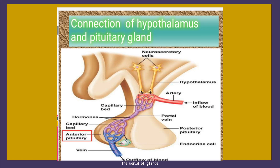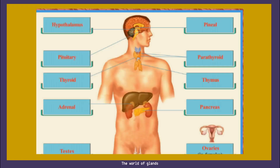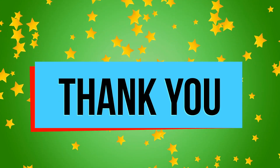With this we conclude the topic of the endocrine system. Here you can see all the glands at a glance. The prime controller of the endocrine system is the hypothalamus; its assistant is the pituitary gland. Next we have pineal, then thyroid and parathyroid, followed by thymus in the chest region, then adrenal gland, pancreas, testis, and ovary. These are the major endocrine glands which help to maintain homeostasis in our body. Thank you.